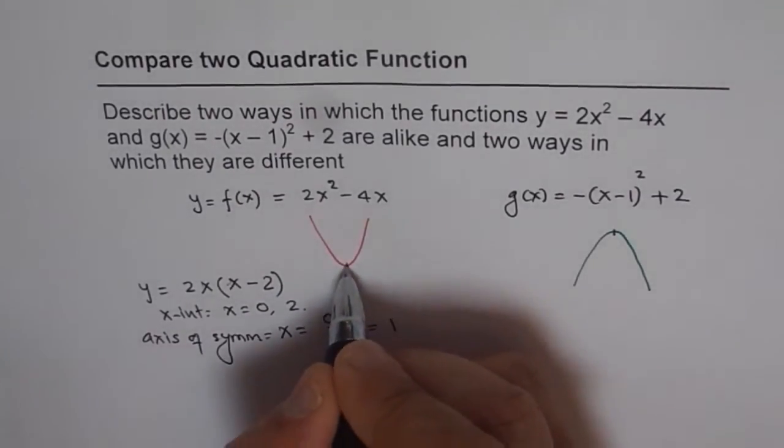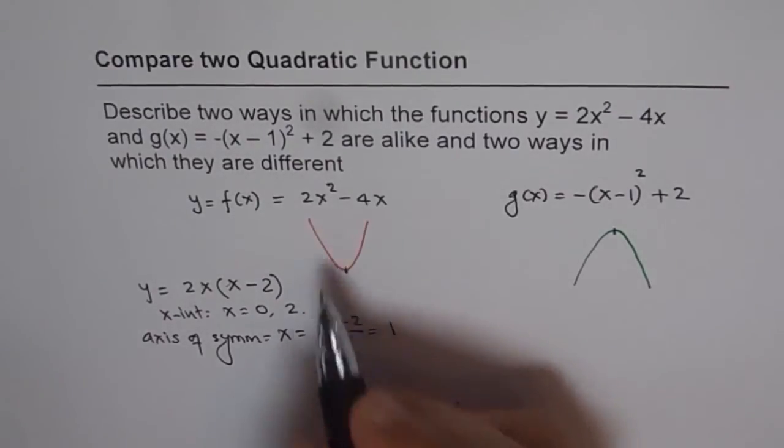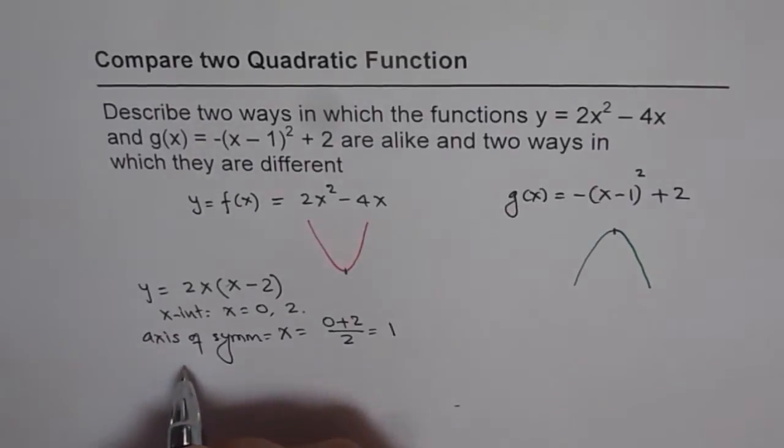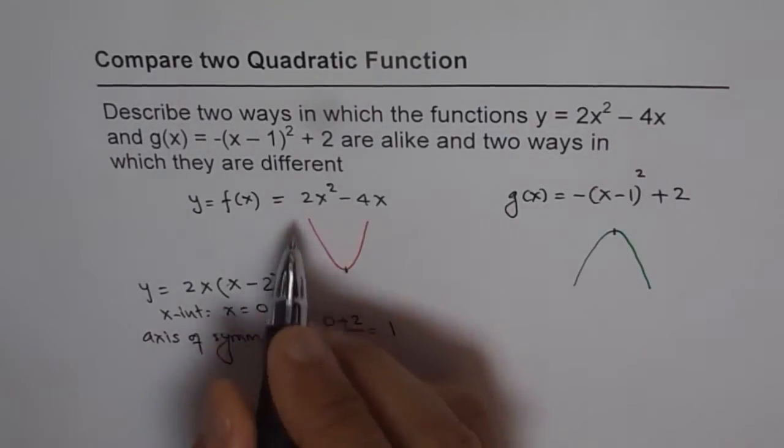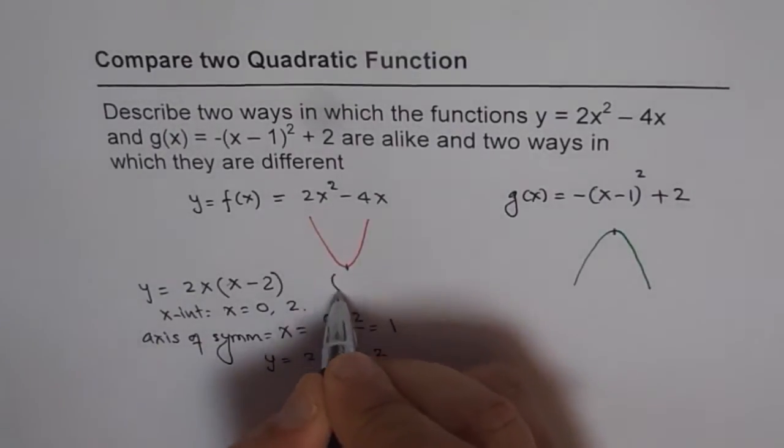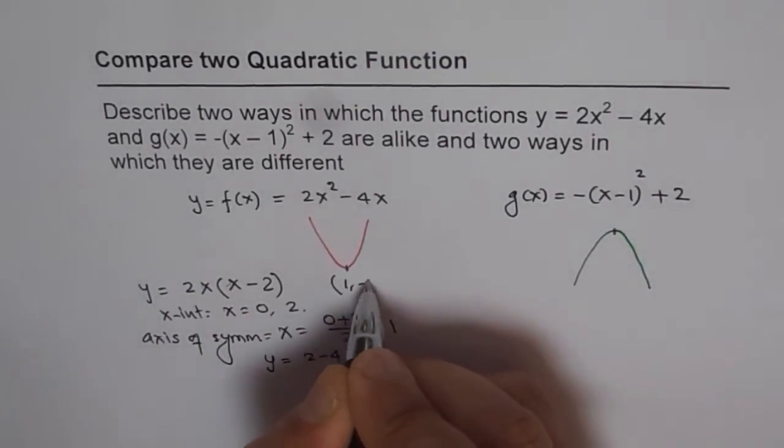So that is the axis of symmetry for us. This point will be, when I plug in 1 here, I'll get the vertex, which will be y equals 2 minus 4, which is minus 2. So the vertex here is (1, -2).